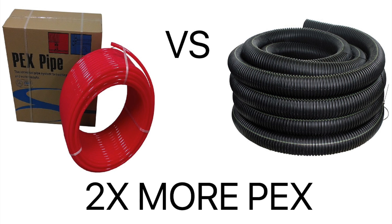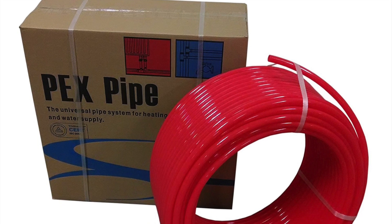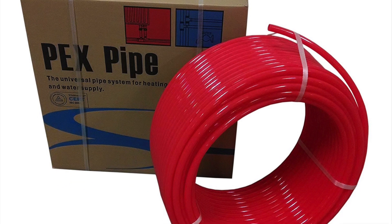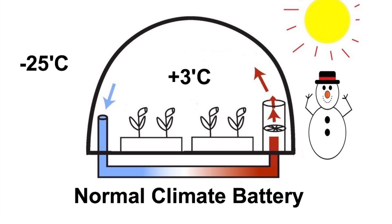As a rule of thumb, you'll need two times the length of PEX liquid tubing as air tubes to supercharge a climate battery. So how does this PEX tubing increase the heat of our earth climate battery?